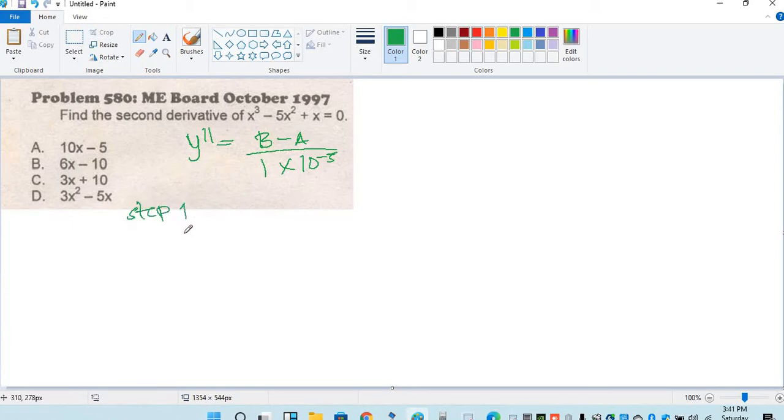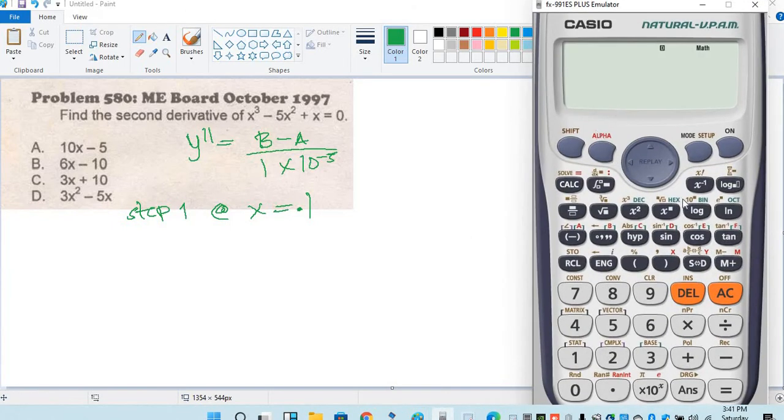x is equal to 0.1. We're in step 1, input the problem. Shift derivative, we call x cubed minus 5x squared plus x.